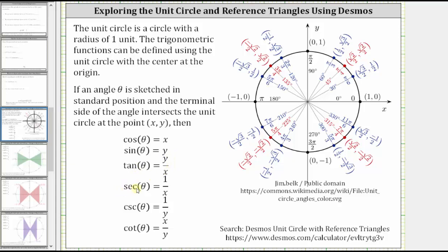Secant theta is equal to the reciprocal of cosine theta, which is equal to one divided by x. Cosecant theta is equal to the reciprocal of sine theta, which is equal to one divided by y. And finally, cotangent theta is equal to the reciprocal of tangent theta, which is equal to x divided by y.